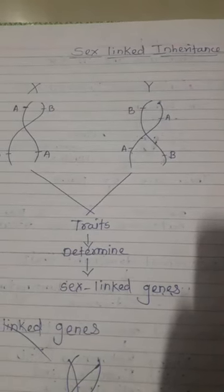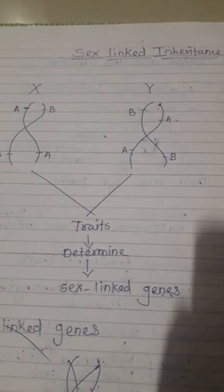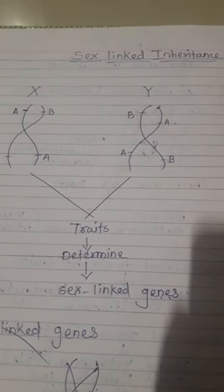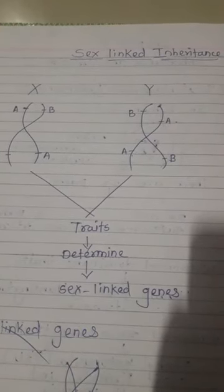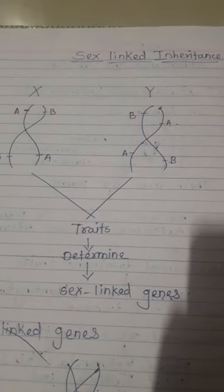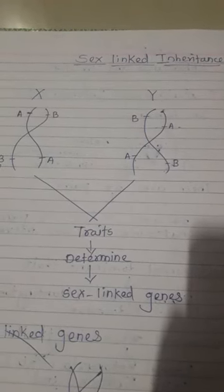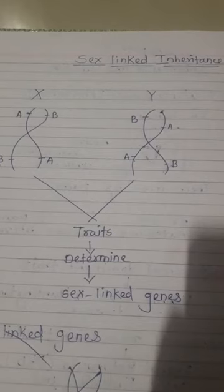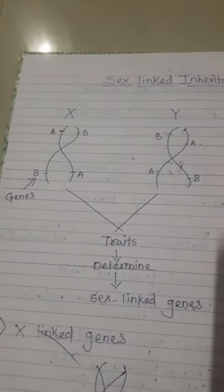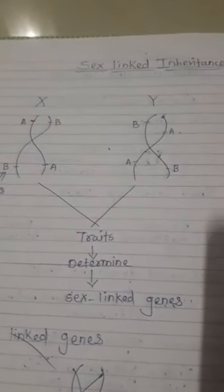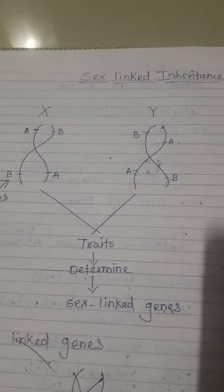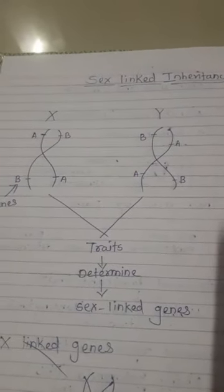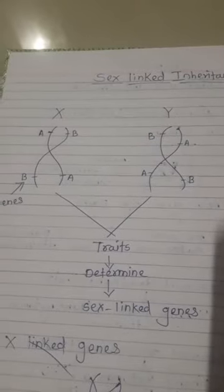Hello friends, my name is Punam Shinde. In the previous lecture on Chapter 3, Inheritance and Variation, we covered autosomal chromosomes, where we saw two types of disorders: the first one is sickle-cell anemia and the second one is phenylketonuria. Now the next topic is sex-linked inheritance.